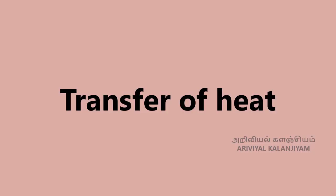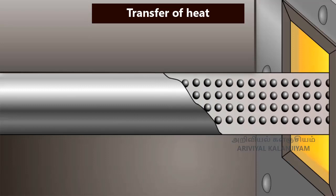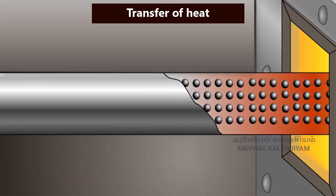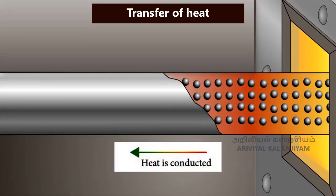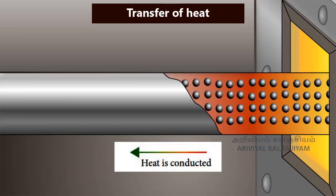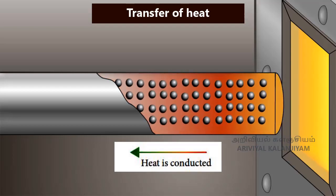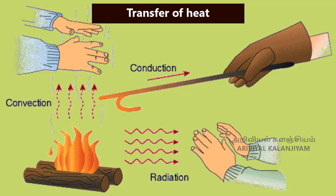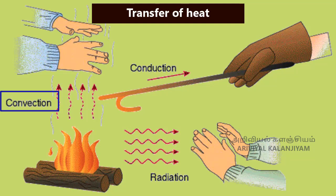Transfer of Heat. If heat energy is supplied to any substance, it will be transferred from one part of the substance to another part. It takes place in different ways depending on the state of the substance. Three ways of heat transfer are conduction, convection, and radiation.